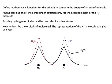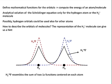How can we describe the orbital of molecules? Possibly the representation of the wave function of the H2 plus molecule can give us a hint.